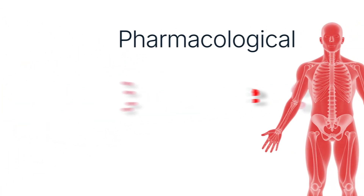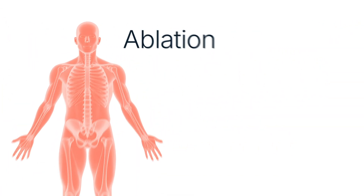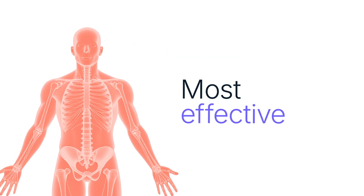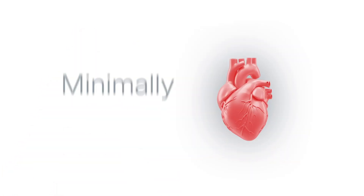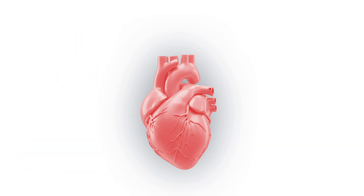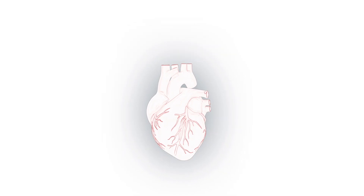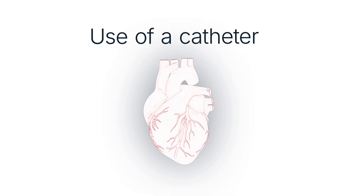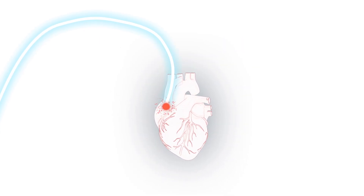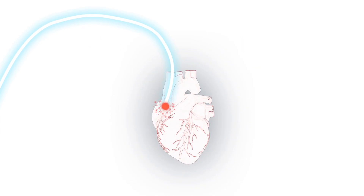There are two main treatments for AF: pharmacological therapy and ablation therapy, which is currently the most effective. Ablation is a minimally invasive procedure. It involves inserting into the heart a thin flexible tube called a catheter, equipped with small electrodes that are used to destroy tissue responsible for triggering AF.